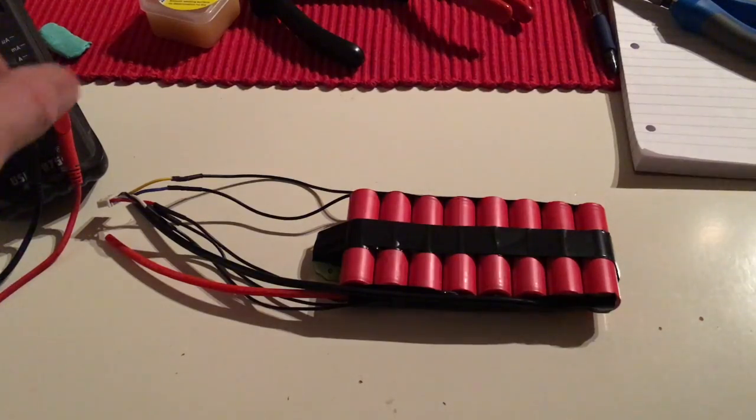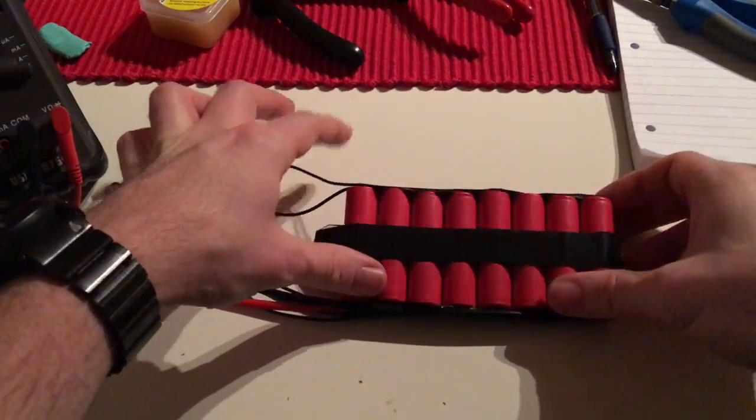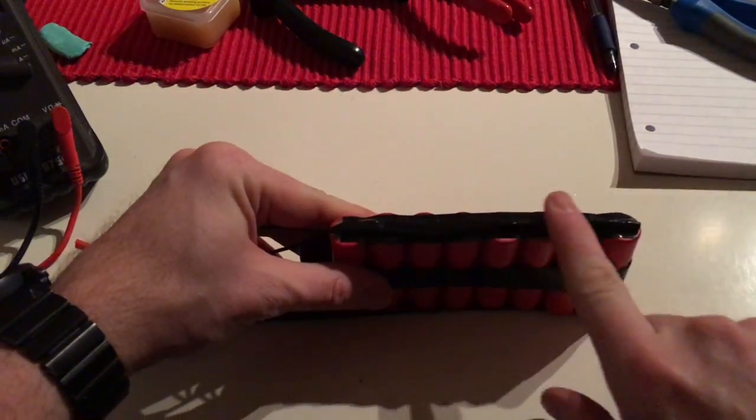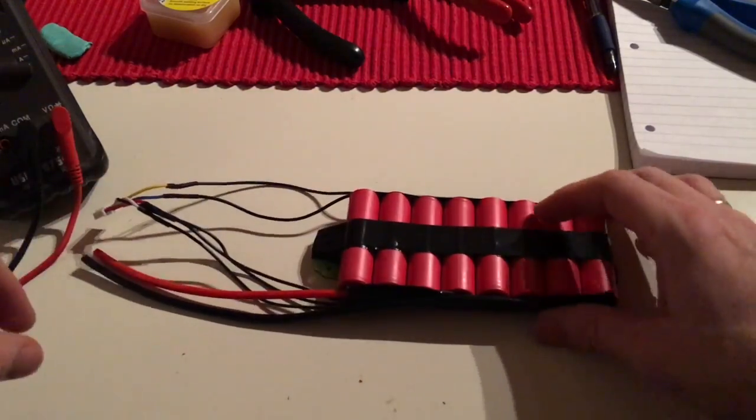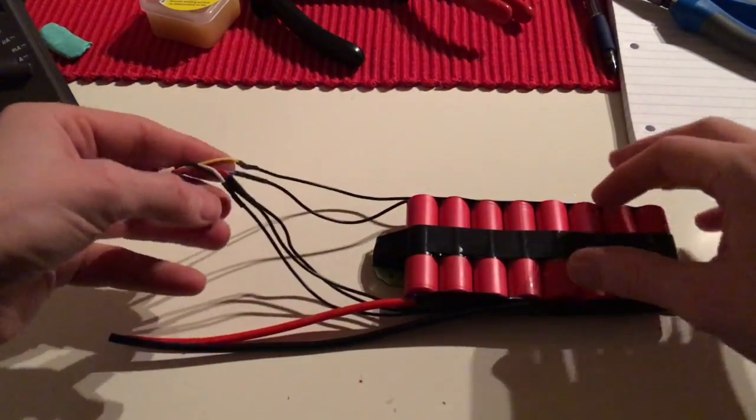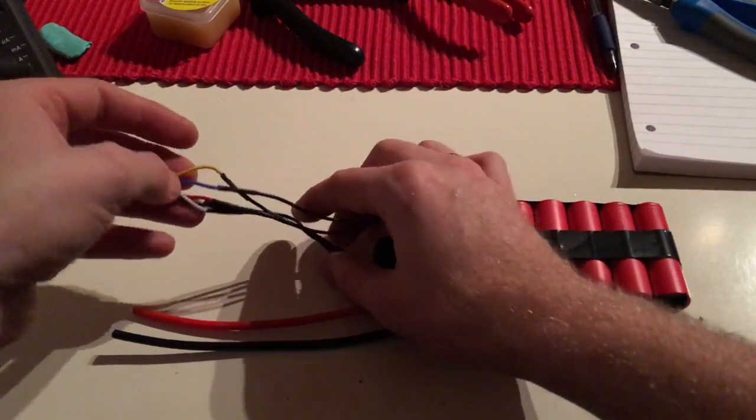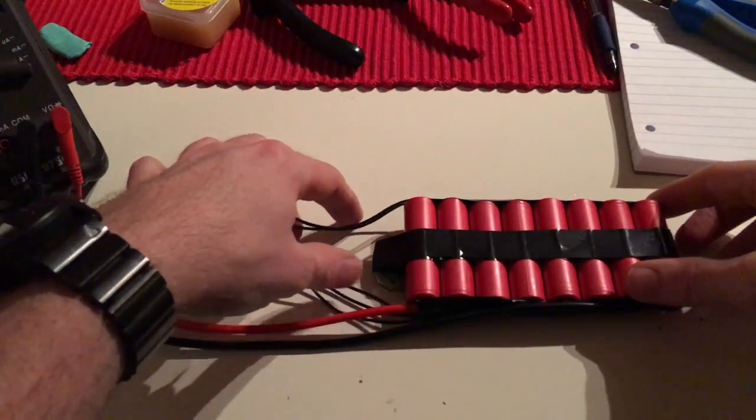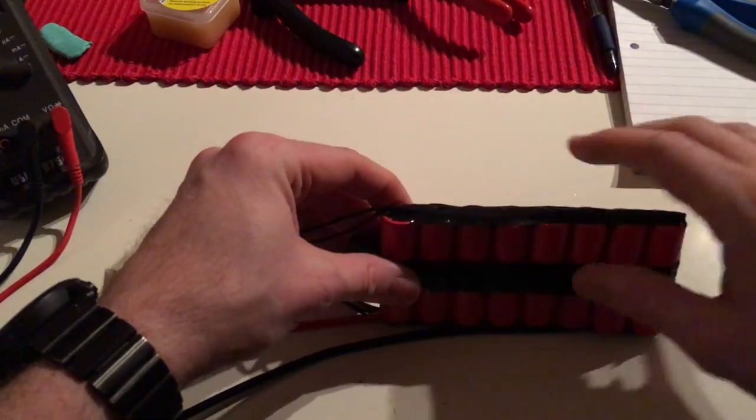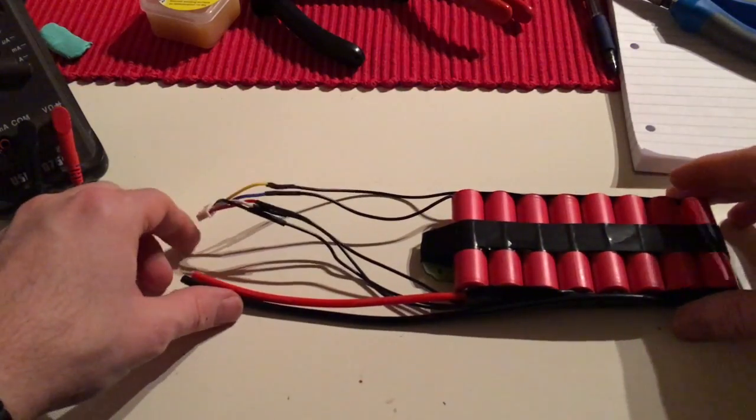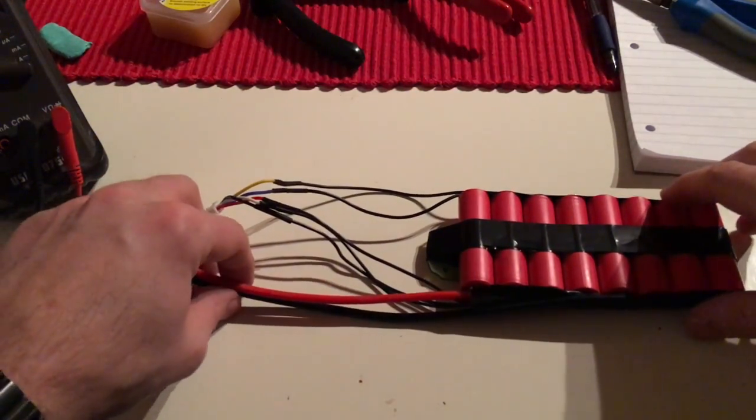Okay, here you can see the finished soldering job. I added some extra protection on top here. And you can see, plus and minus. And the balance wire is all soldered up here according to my drawing. So it's quite easy actually to do when you know what to do. What we are going to do now is measure if everything is in order.